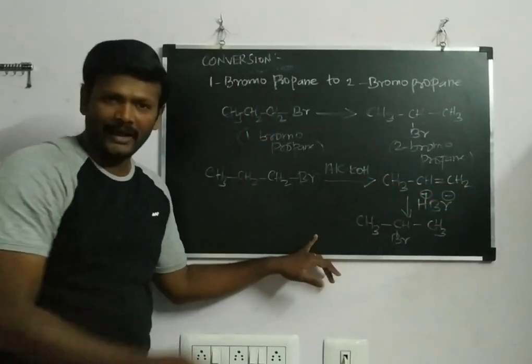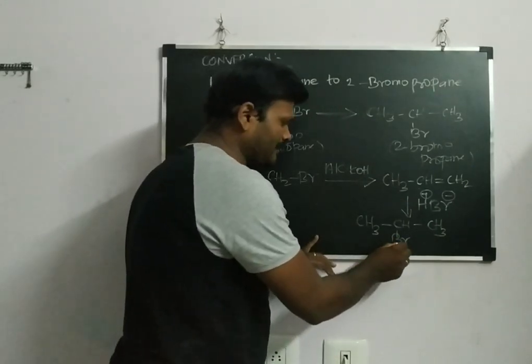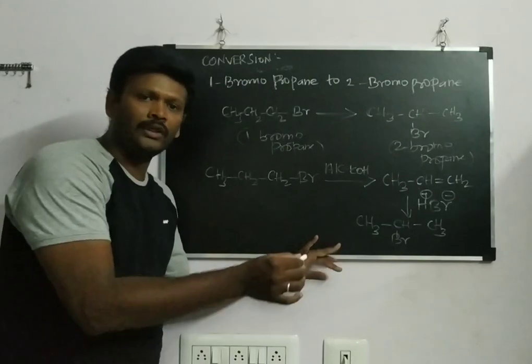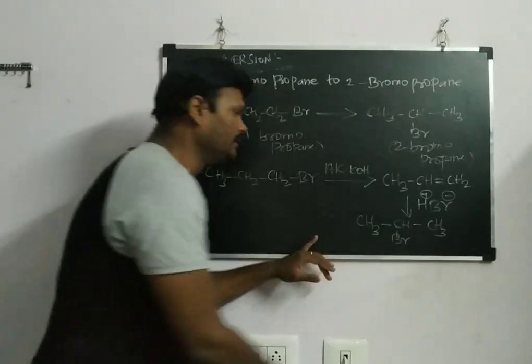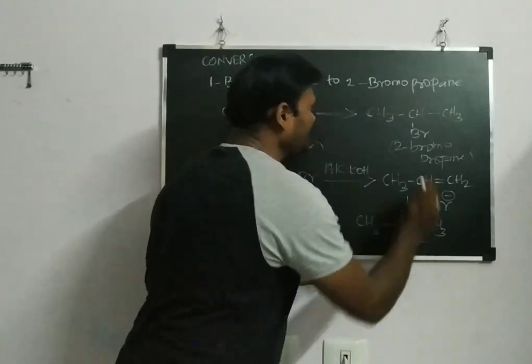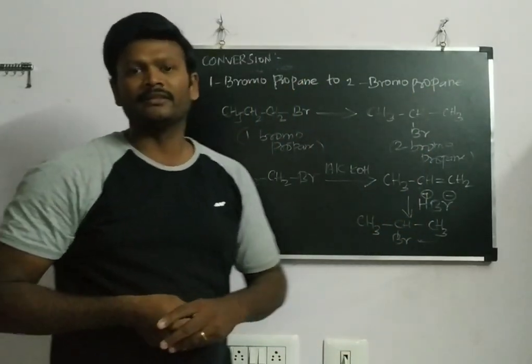That alkene will be reacting with HBr according to Markovnikov rule. That Br minus, the negative entity, will go to the lesser number of hydrogen present on the double bonded carbon. So I am getting the product, 2-bromopropane. Thank you so much for watching.